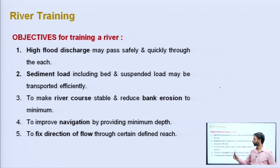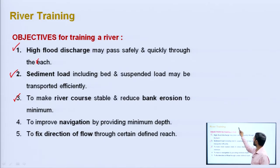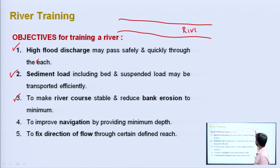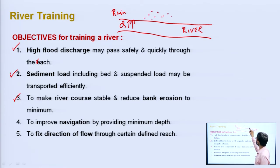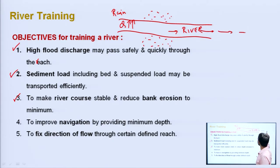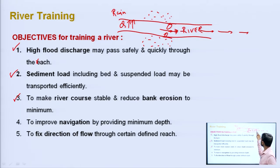The objectives for training a river include: first, that high flood discharge may pass safely and quickly through the reach. Due to heavy rains, discharge in the river can suddenly increase. We do not want this extra discharge to move onto the surrounding banks and over-flood the region. So we want the discharge to move faster through the channel by building structures that prevent bank erosion and convey water smoothly in the forward direction.